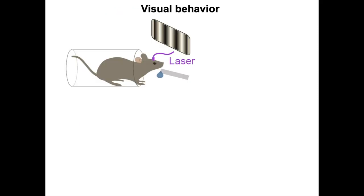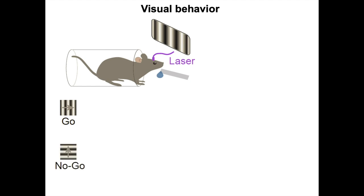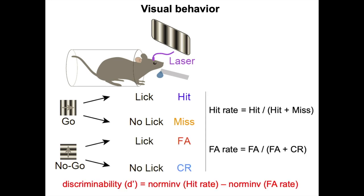To measure visual perception at the behavioral level, we trained head-fixed mice on a go/no-go discrimination task. During each trial, either a go or no-go stimulus was presented. Licking in go trials was rewarded. Licking in no-go trials was punished. We measured performance by discriminability based on hit rate and false-alarm rate.